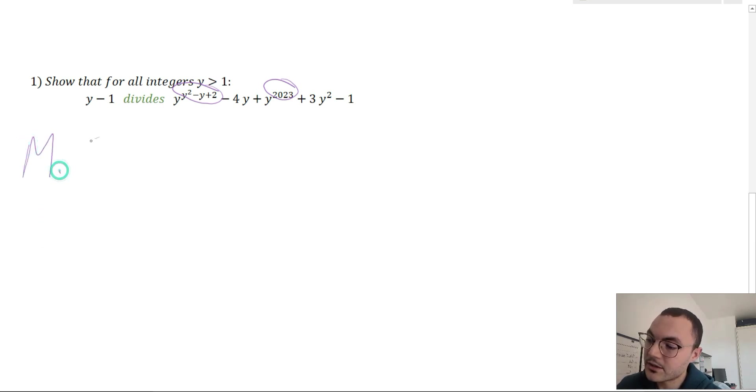So applying the make it easier strategy, an easier problem would be: y minus one divides y minus 4y plus y plus 3y² minus one.